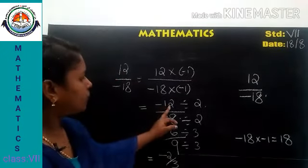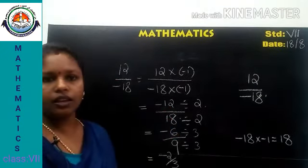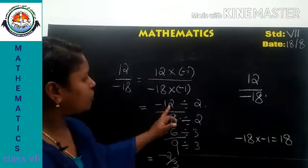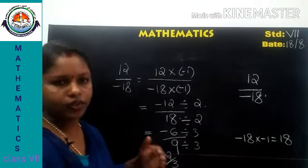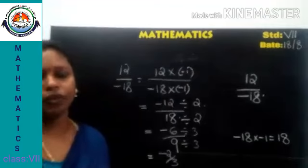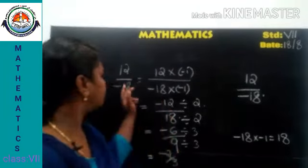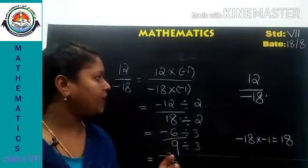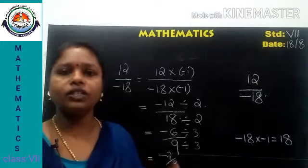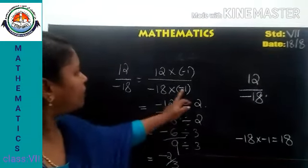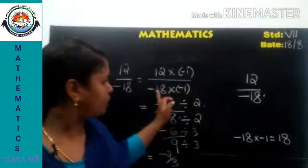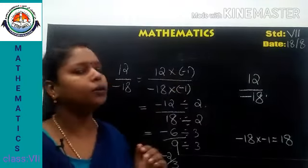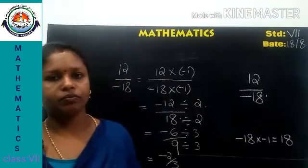Alternatively, the HCF of 12 and 18 is 6, since 2 times 6 is 12 and 3 times 6 is 18. We can directly divide by the HCF to get negative 2 by 3. So the rule is: if the denominator is negative, we need to convert it to positive by multiplying both the numerator and denominator by negative 1.